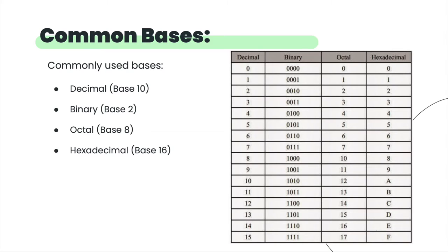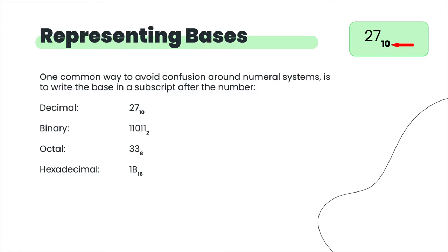When we represent bases, we use subscript notation — we write what number base it is in a small subscript under the number. For example, to represent the number 27: in decimal it has subscript 10; in binary, subscript 2; in octal, subscript 8; and in hexadecimal, subscript 16.